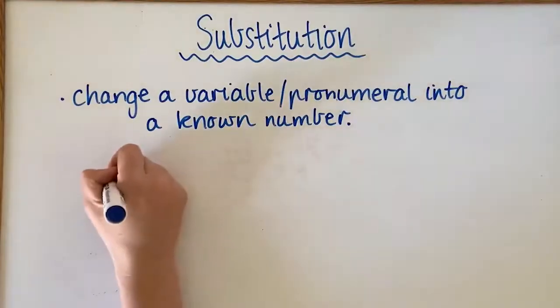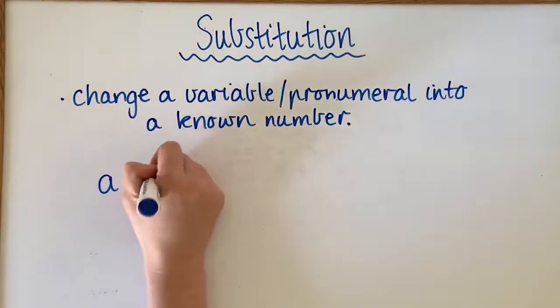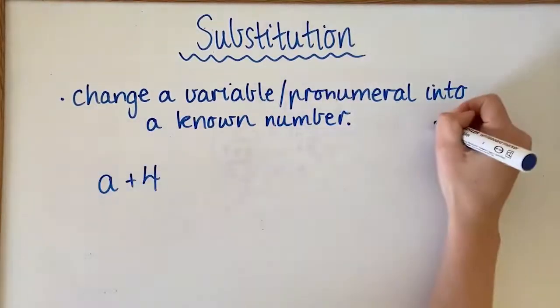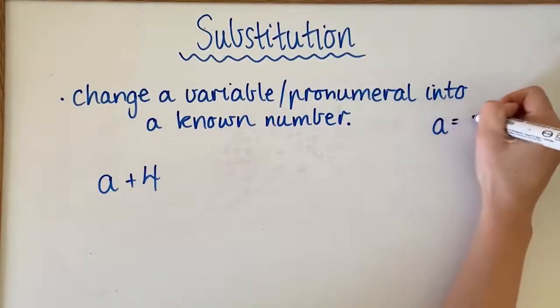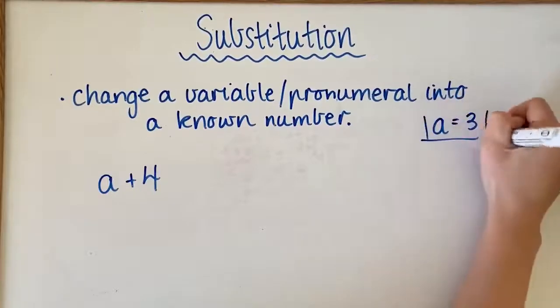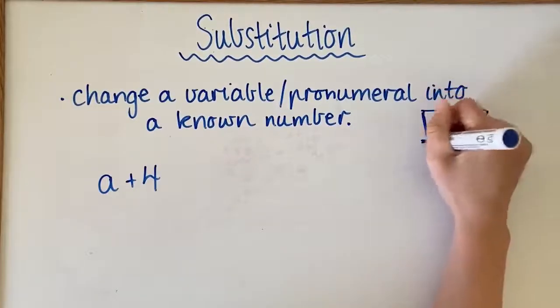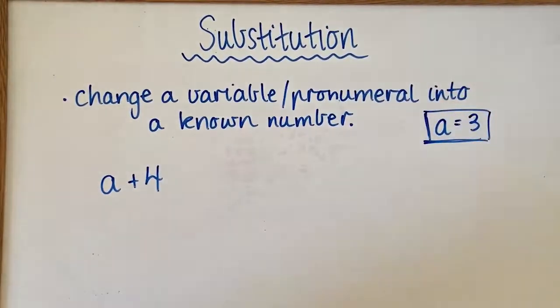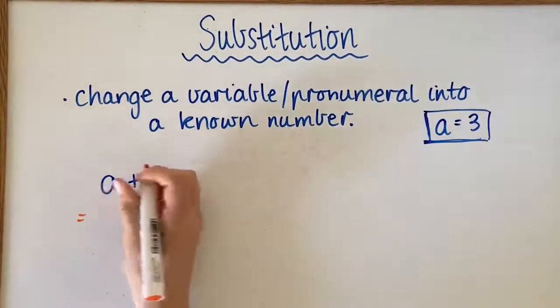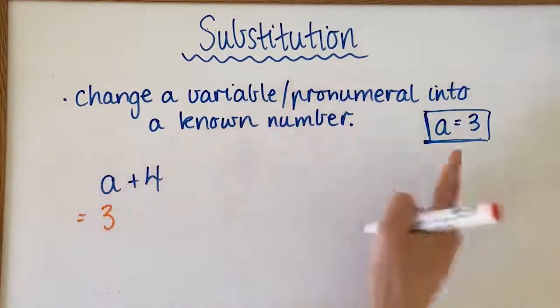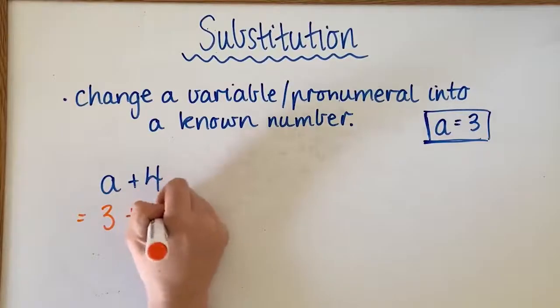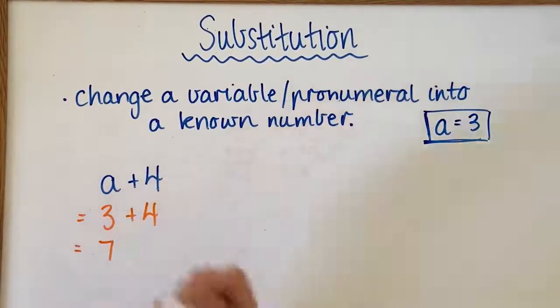For example, you might have something like a plus four, and you're told that a equals three. You would be given information around what a is. Then we would change a to a three and add it to four, and we would get the number seven.